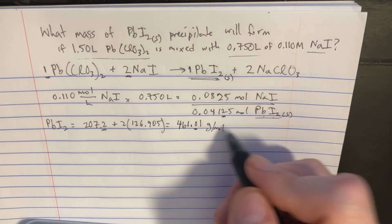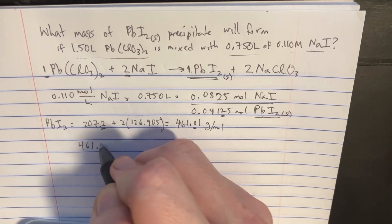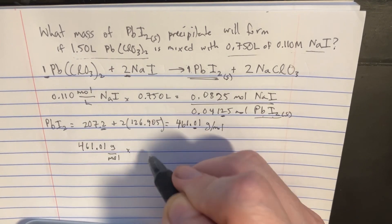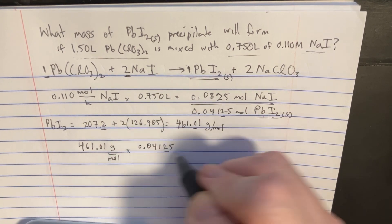So let's go and multiply those together and essentially cancel out the moles. That's 461.01 grams per mole. If we multiply that by 0.04125 mole,